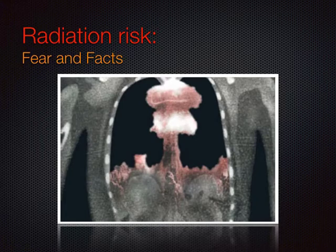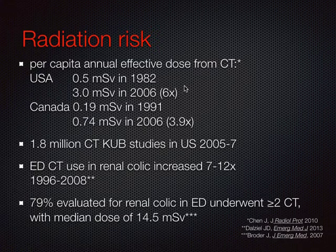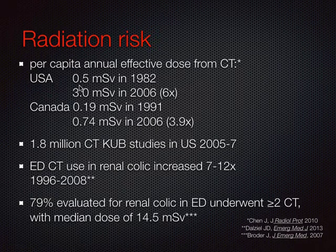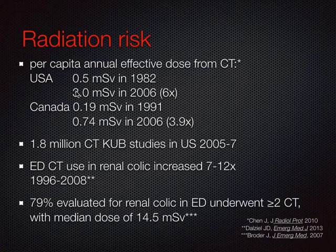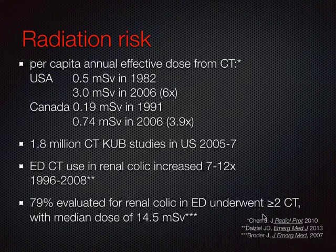There's a lot of concern about the increasing dose from medical imaging, most of it coming from CT. There's been a six-fold increase in radiation dose related to CT from 0.5 to 3 millisieverts in the last 35 years. The United States is 3.9 times higher than Canada. Of the 61 million CTs performed annually in the U.S., almost 2 million are CT KUBs, and the majority of patients who come to the ER with renal colic will get at least two CTs with a very high median dose historically.